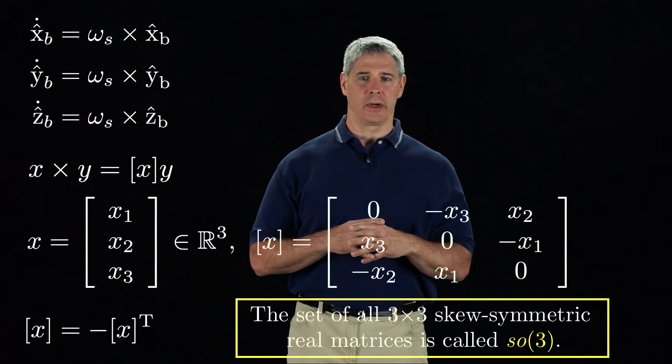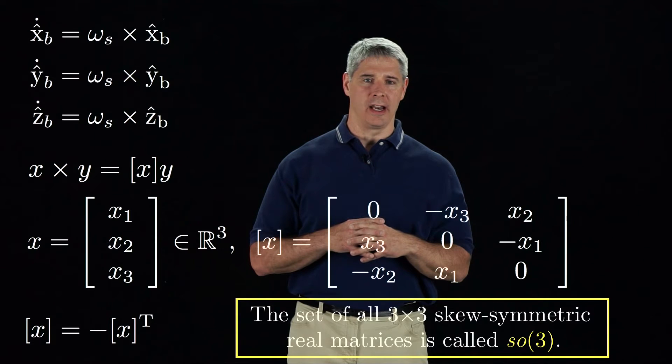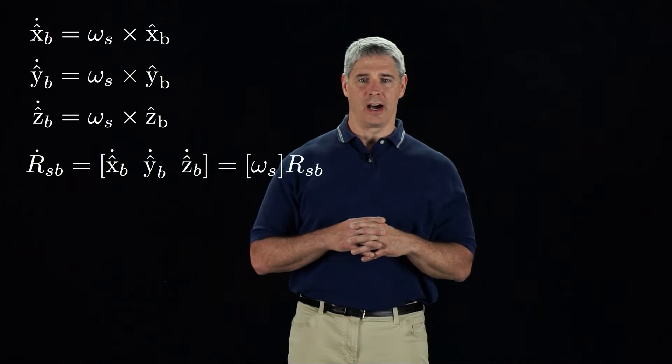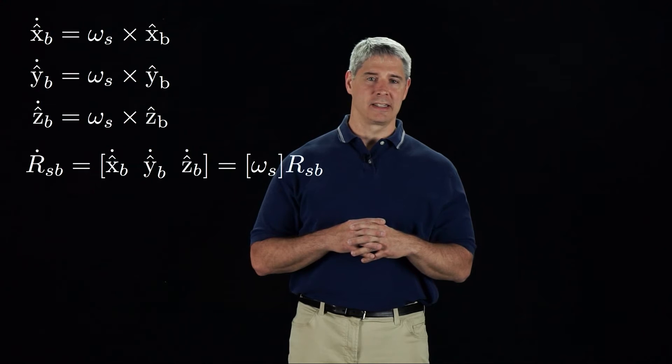With the bracket notation, we can write the relationship between R dot and the angular velocity omega S as R dot equals bracket omega S times R.